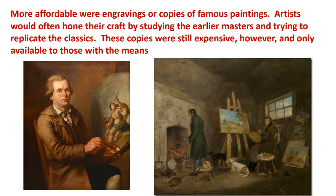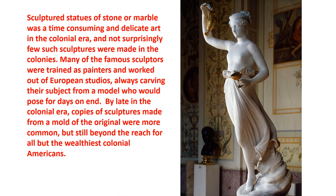More affordable were engravings or copies of famous paintings. Artists would often hone their craft by studying earlier masters and trying to replicate the classics, though these copies were still expensive and only available to those with the means. Sculptured statues of stone or marble were a time-consuming and delicate art in the colonial era, and not surprisingly few such sculptures were made in the colonies.